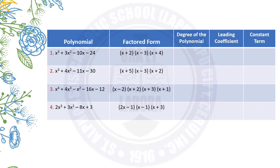The given table shows polynomials and their factors. The first polynomial, x cubed plus 3x squared minus 10x minus 24, has factored form: x plus 2, x minus 3, and x plus 4. The second polynomial, x cubed plus 4x squared minus 11x minus 30, has factored form: x plus 5, x minus 3, and x plus 2. The given polynomials have degrees 3, 3, 4, and 3. As observed, the number of factors corresponds to the degree of the polynomial.